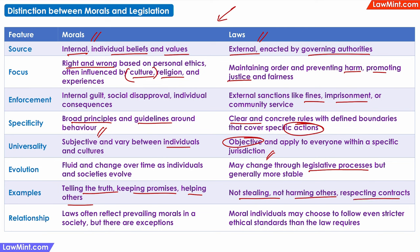Laws are usually made based on the prevailing morals of the society at that time. For example, when the society realised that child marriage is morally wrong, then laws were passed to make it a crime. Morals are often extended above the law — individuals may choose to have personal ethical standards that go beyond what is a legal requirement. For example, when the country was under lockdown and the law required businesses to continue paying salaries to their full-time employees, some businesses decided to pay even casual and contract staff also. So they went above and beyond what was required by the law, just because they felt it was morally right, even though it was not a legal requirement.